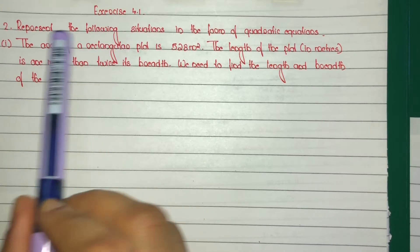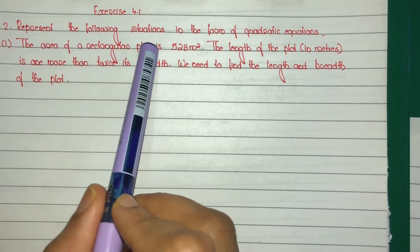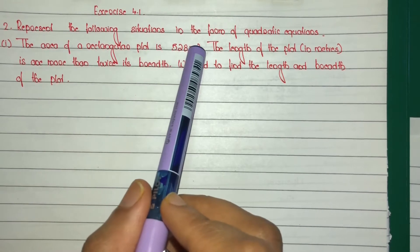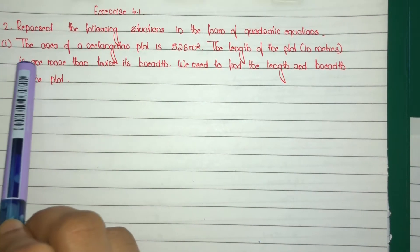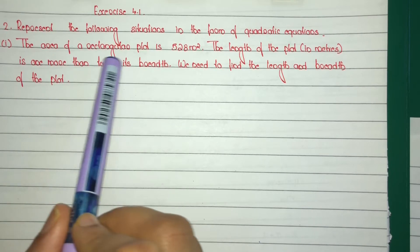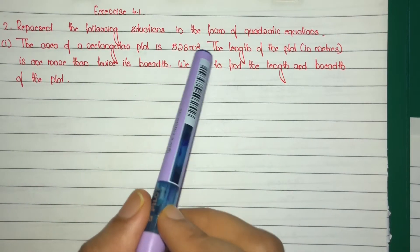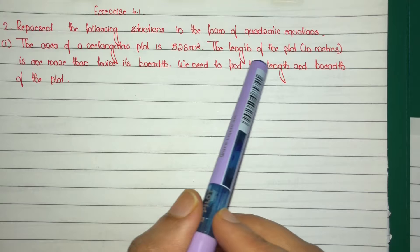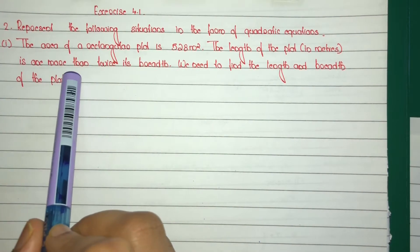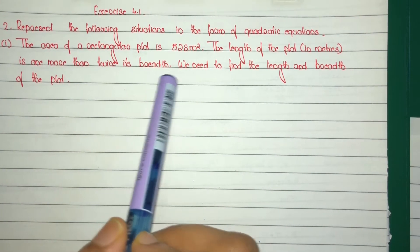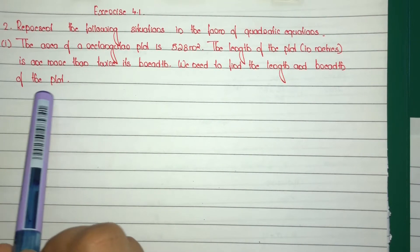Exercise 4.1, question number 2: represent the following situations in the form of quadratic equations. First question: the area of a rectangular plot is 528 square metres. The length of the plot in metres is one more than twice its breadth. We need to find the length and breadth of the plot.